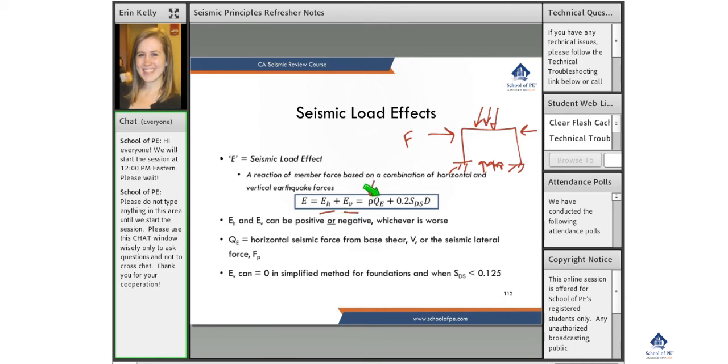And that's multiplied by rho, which we know is the redundancy factor. We talked about that, I don't know if it was last Saturday or Sunday, but it was a while ago. So yeah, we've talked about the redundancy factor. We've seen that. It's either 1.0 or 1.3.